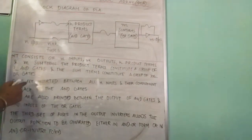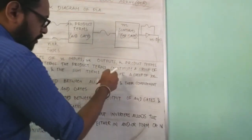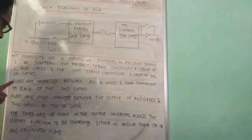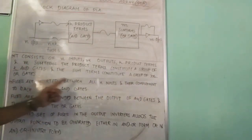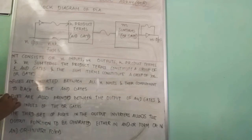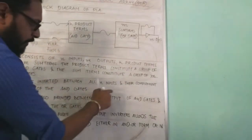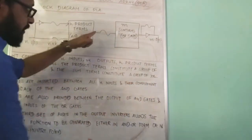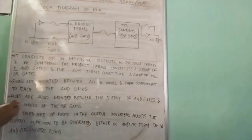Next point: fuses are inserted between all N inputs and their complement to each of the AND gates. First case, we have the second set of fuses: fuses are also provided between output of the AND gates and the inputs of the OR gate.